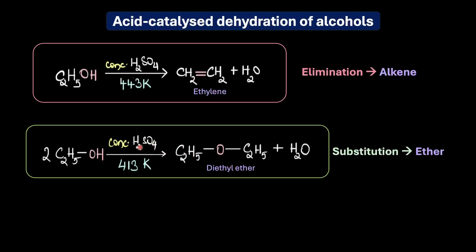You can see that in the ether synthesis two molecules of alcohol gives us two product molecules: an ether and water. But in the elimination reaction, one molecule of alcohol gives us two product molecules: an alkene and water molecule.